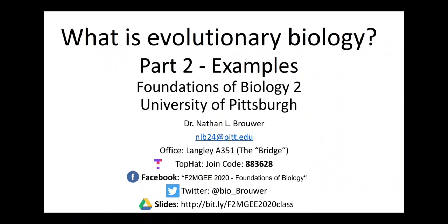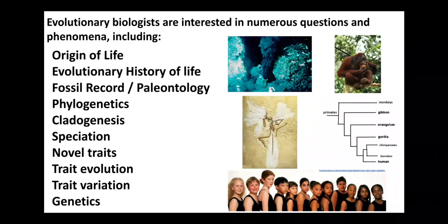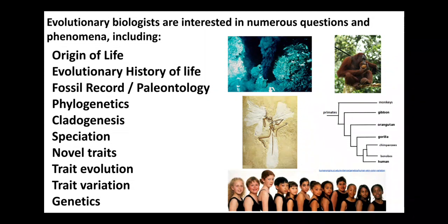In this video I want to talk about some examples of exactly the types of questions and types of research that evolutionary biologists carry out. In the previous video I laid out a number of general types of questions with some brief examples of what evolutionary biologists, paleontologists, and evolutionary anthropologists study. In this video I just want to provide a few more details of those examples.